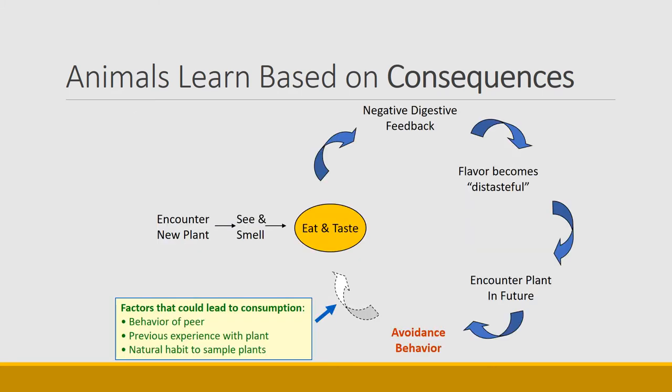Here's how aversion based on consequences might work. If an animal encounters a new plant, they might smell, taste, or see it — but the really important thing is that they eat and taste it. They get some digestive feedback, and if that feedback is negative, that flavor will become distasteful. When they encounter that plant in the future, they'll avoid it. That avoidance behavior can be broken down if peers are eating it or if cattle and sheep, being ruminants, have a natural propensity to try plants. But it's that aversion-based avoidance that allows animals to avoid toxic plants.